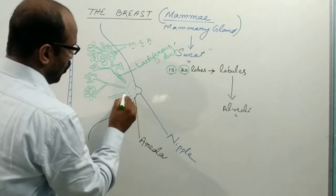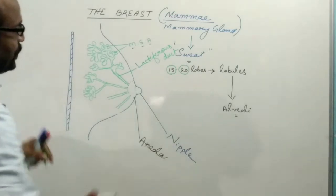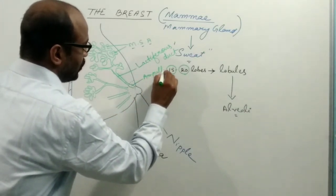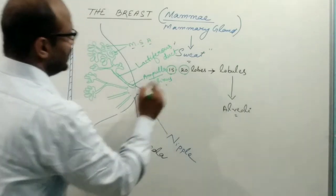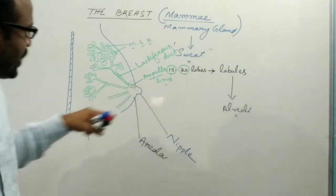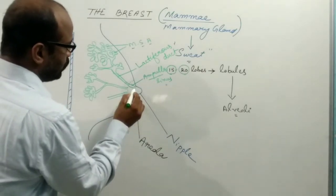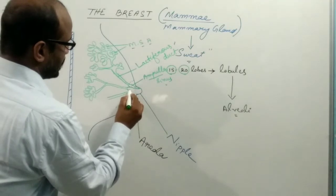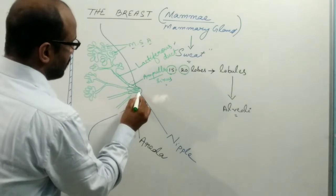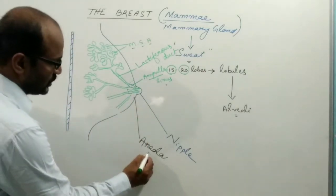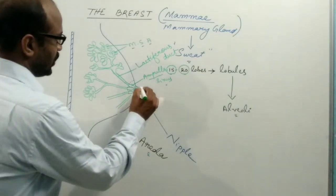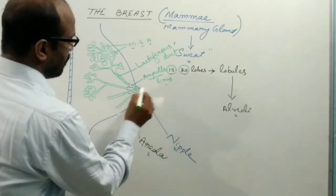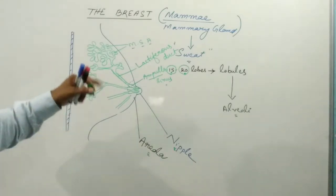All the lactiferous ducts converge to the areola. Beneath the areola, each lactiferous duct forms an ampulla or sinus, known as the lactiferous sinus, which acts as a temporary reservoir for milk. From the ampulla or sinus, a small duct extends and opens on the surface of the nipple. So the surface of the nipple contains about 15 to 20 pores, which are the openings of the lactiferous ducts.